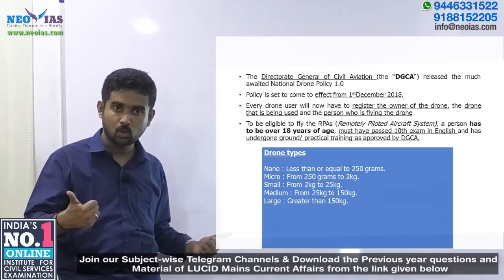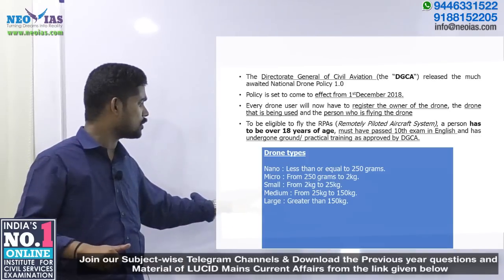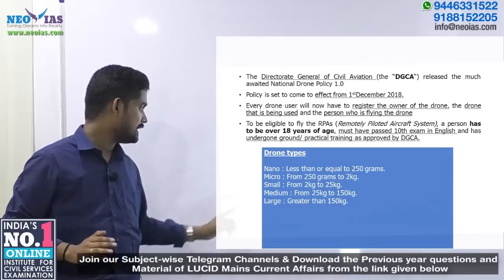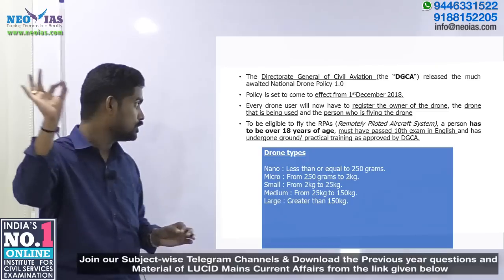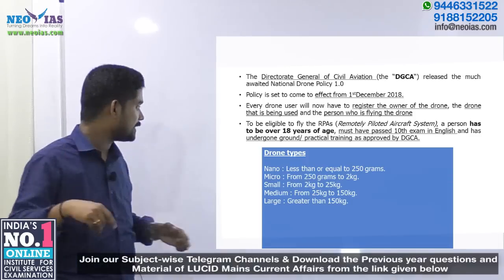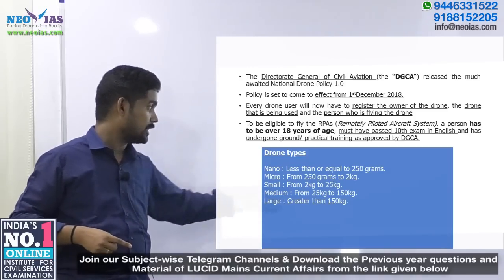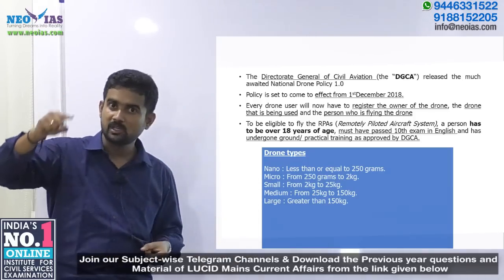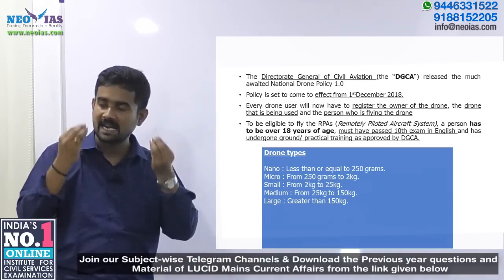The drones as per this policy are classified into five categories: nano drones (less than or equal to 250 grams), micro drones (250 grams to 2 kilograms), small drones (2 to 25 kilograms), medium drones (25 to 150 kilograms), and large drones (greater than 150 kilograms).